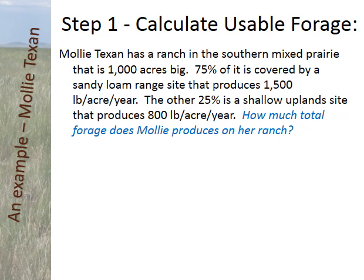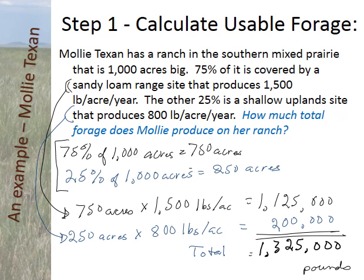Here are the calculations. Seventy-five percent of the ranch is 750 acres. Those 750 acres produce fifteen hundred pounds per acre, so that's one million one hundred twenty-five thousand pounds of forage. The shallow site is 250 acres and produces eight hundred pounds per acre, for two hundred thousand total pounds. So the total amount of forage on the ranch would be one million three hundred and twenty-five thousand pounds. These calculations are almost always in dry weight — so this is pounds of dry weight of forage.